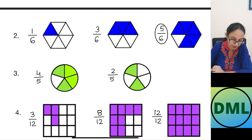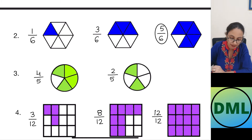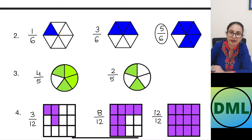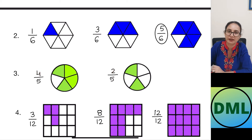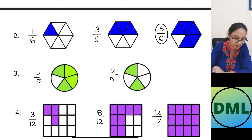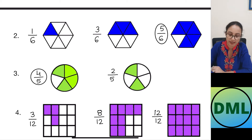Let's see one more example. This is 4 by 5 — out of 5 parts, 4 parts are shaded. Next fraction is 2 by 5 — out of 5 parts, 2 parts are shaded. Now I will look for my denominator first — it is the same. Now I will look for my numerators: it is 4 here and 2 here. Which one is bigger? 4. So 4 by 5 is my greatest fraction.